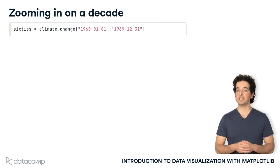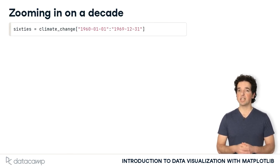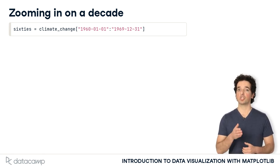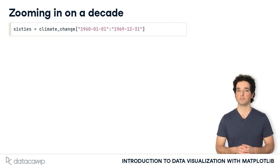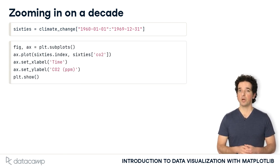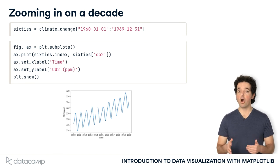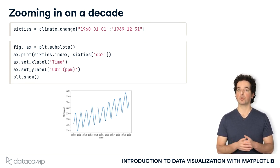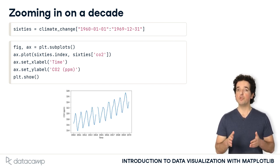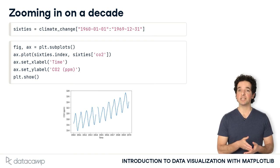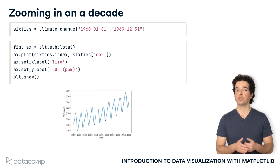We can select a decade of the data by slicing into the data frame with two strings that delimit the start date and end date of the period that we are interested in. When we do that, we get the plot of a part of the time series encompassing only 10 years worth of data. Matplotlib also now knows to label the x-axis ticks with years, with an interval of one year between ticks.